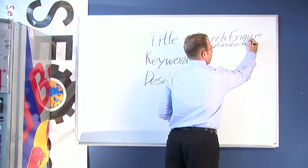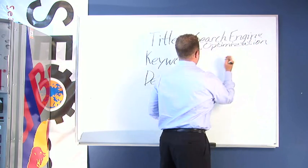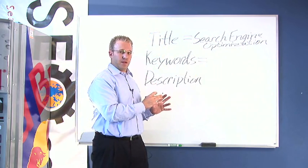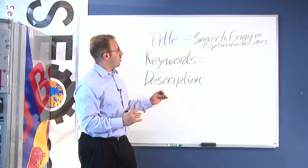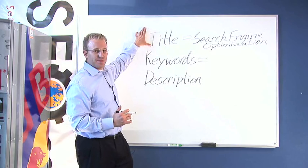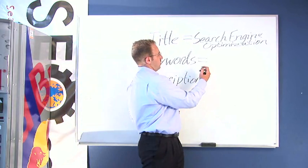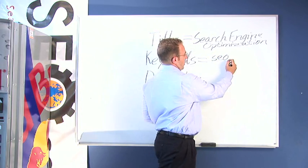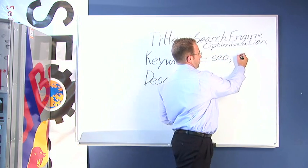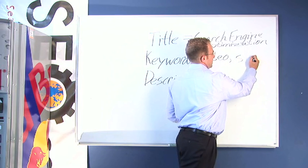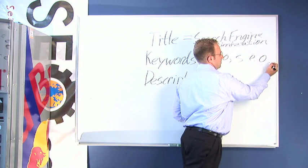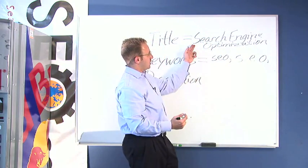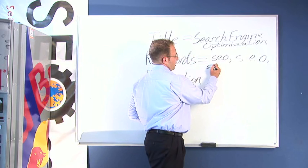Now everybody has their own style of SEO, but I prefer to use three to five keywords per page assignment. So when I'm going to assign words for search engine optimization, I'm going to use the keyword SEO, all lowercase, put a comma, then use S E O with spaces in between in case somebody types it with spaces, and then assign the keyword search engine optimization.